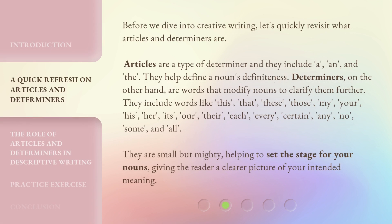Before we dive into creative writing, let's quickly revisit what articles and determiners are. Articles are a type of determiner, and they include a, an, and the. They help define a noun's definiteness.